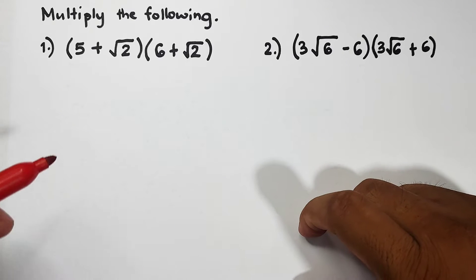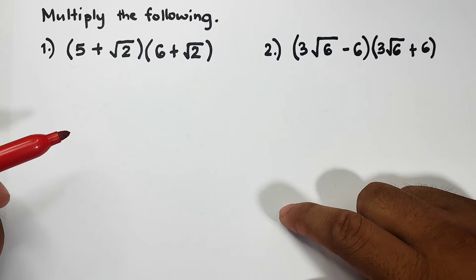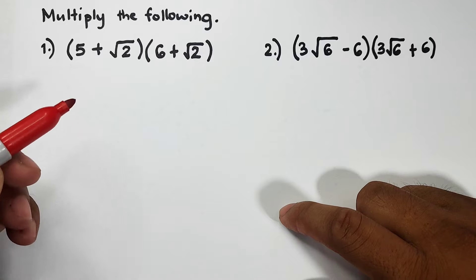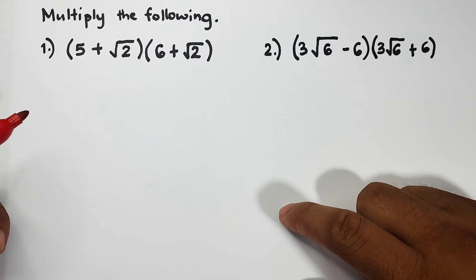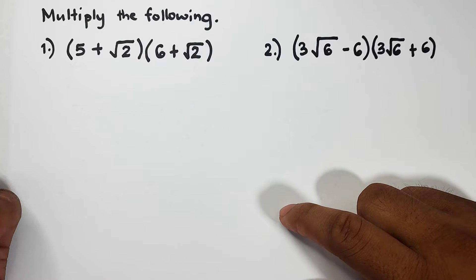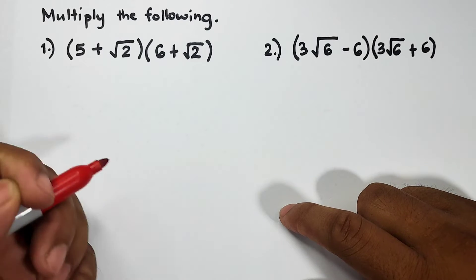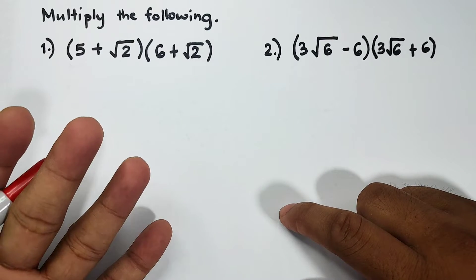So the remedy here is to use the FOIL method. When we say FOIL method, the F is for first terms, O is outer terms, I is inner terms, and the letter L is for the last terms.